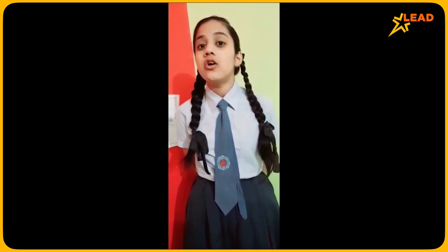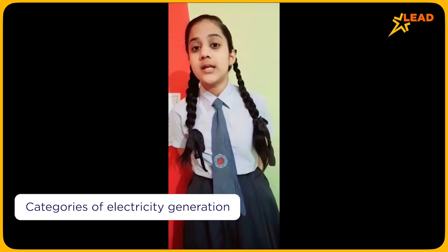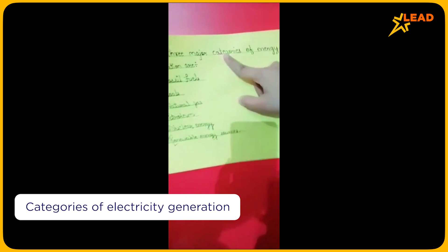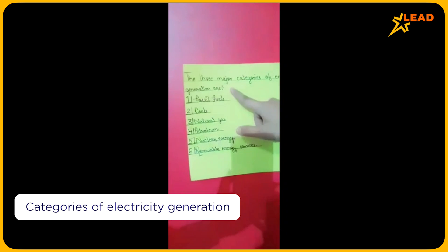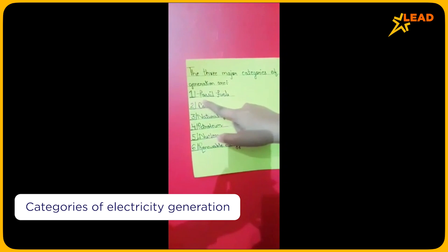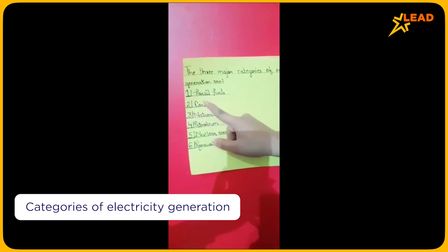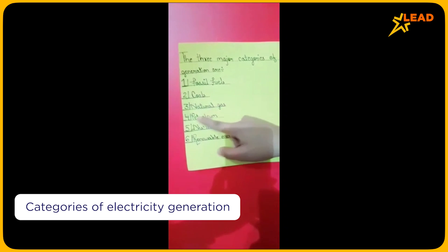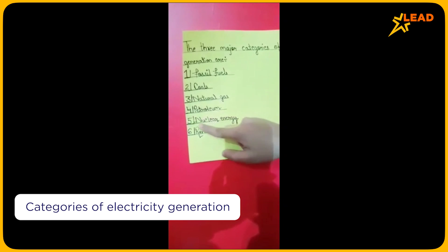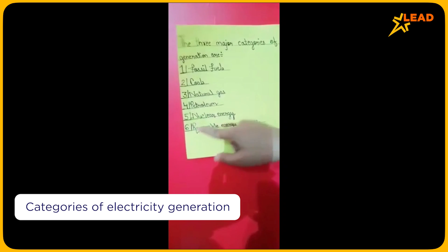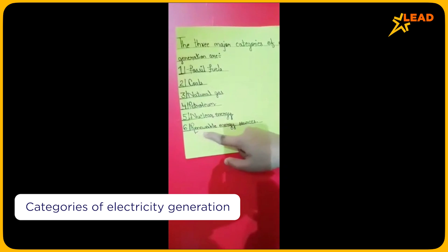My next topic is the categories of electricity generation. The three major categories are: first is fossil fuels, second is coal, third is natural gas, fourth is petroleum, fifth is nuclear energy, and sixth is renewable energy sources.